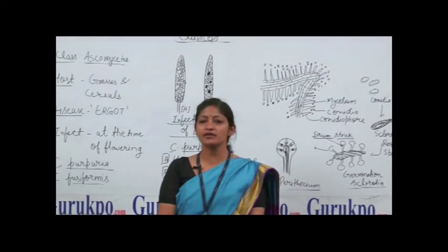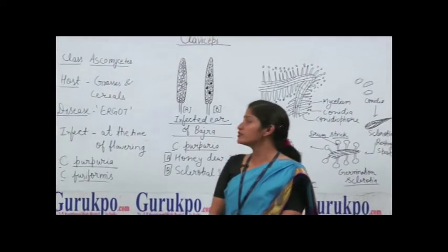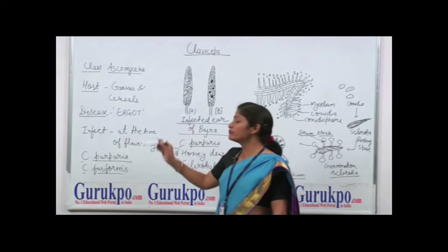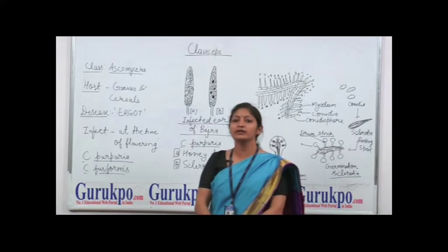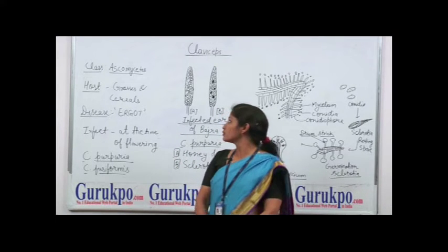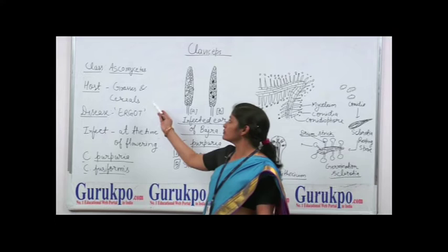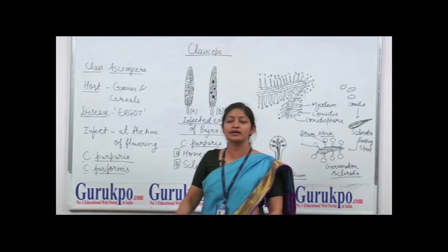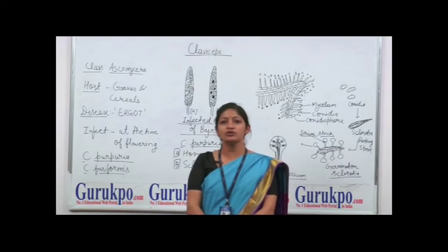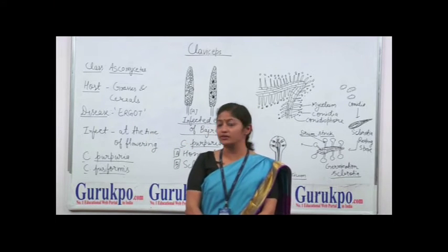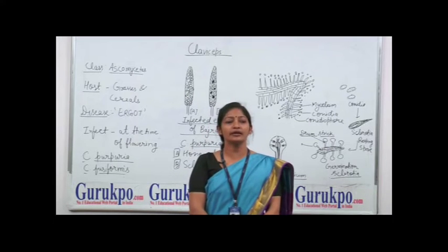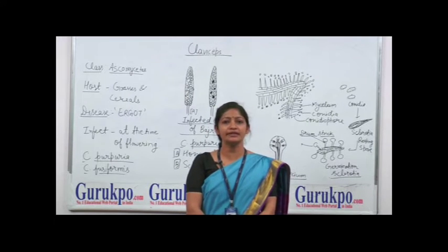Claviceps is a fungus which belongs to the class Ascomycetes. It mainly infects the members of Gramineae. Its hosts are members of the grass family — cereals like rye, wheat, jowar, etc. This fungus mainly causes ergot disease in these plants.